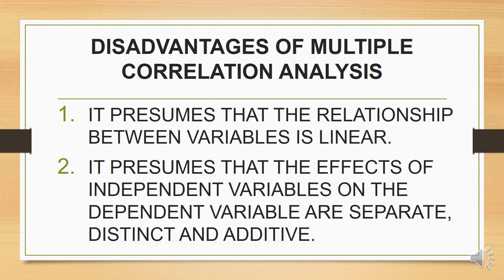The limitations of multiple correlation analysis: First, it presumes that the relationship between variables is linear. In other words, the rate of change in one variable in terms of another is assumed to be constant for all values. In practice, most relationships are not linear but follow some other pattern. Thus this limits somewhat the use of multiple correlation analysis, as linear regression coefficients are not accurately descriptive of curvilinear data.